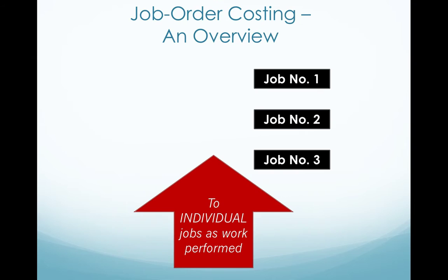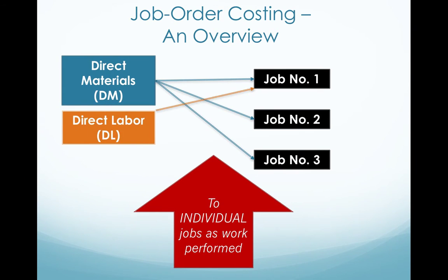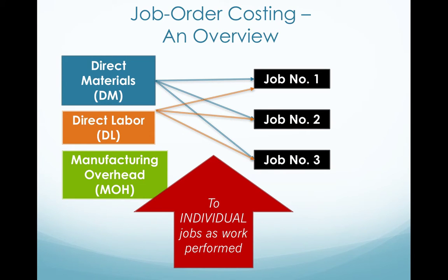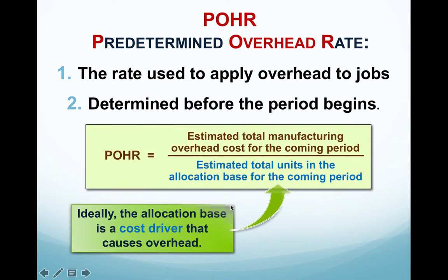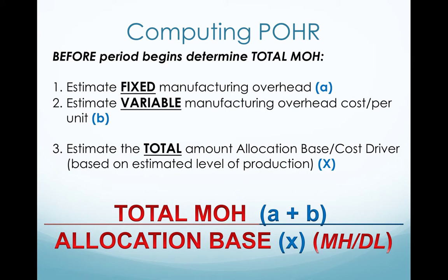So this shows you that direct material, direct labor, and manufacturing overhead can be applied to the individual jobs. Direct material and direct labor are applied to individual jobs as they occur, and manufacturing overhead is applied at the end of the period. You know how to estimate the predetermined overhead rate — the POHR — which is always divided by the cost driver, typically direct labor. You take the total estimated manufacturing costs and divide by your cost driver. That includes both the fixed and variable portions of estimated overhead.